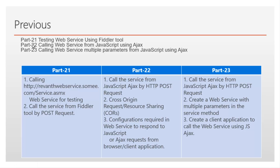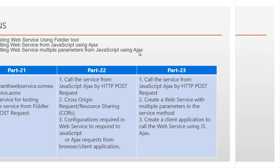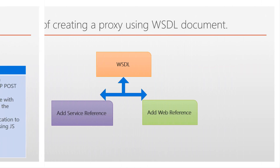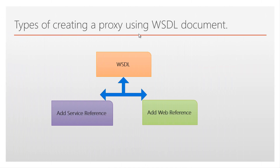In previous videos I discussed testing web services using the Fiddler tool in part 21, calling a web service from JavaScript using Ajax in part 22, and calling a web service with multiple parameters from JavaScript using Ajax in part 23. Now, types of creating a proxy using a WSDL document.